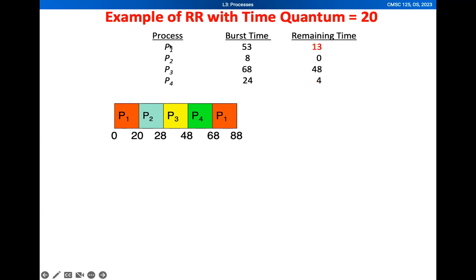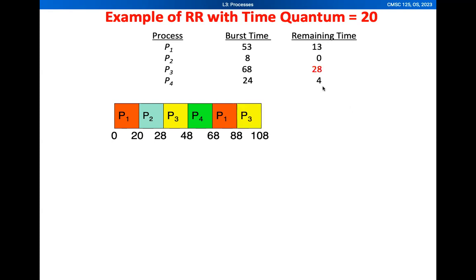P1 will execute for 20 milliseconds again, so 33 minus 20 gives us 13 remaining burst time. Then we skip P2, and P3 gets to execute, leaving 28 remaining time. Then P4 gets to execute for 4 milliseconds and completes. So P2 and P4 are now done.